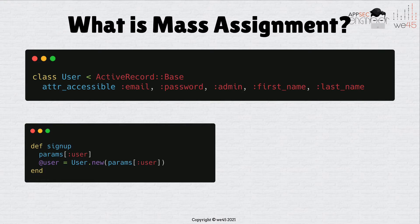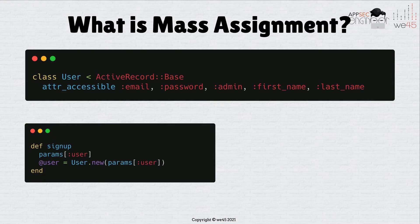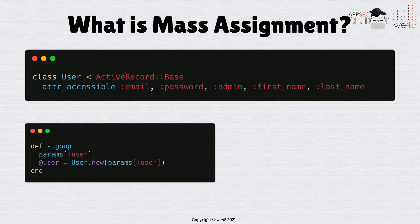The problem with the signup functionality is that the user is signed up based on parameters that come from the front end, which means the developer is not really checking anything. The developer is not validating whether only certain fields are being set when the user is signing up. As a result, if the attacker is able to guess that there is a parameter called admin and sets it to true, the attacker now has administrator privilege on that application.